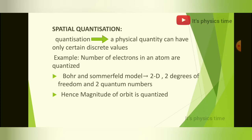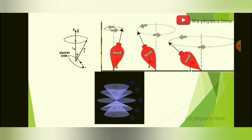The Bohr and Sommerfeld atom model have the orbits of the electron in two dimensions. If you want to define the position of the electron, you need two degrees of freedom and hence two quantum numbers, where the magnitude of the orbit is quantized. This picture shows the spatial quantization and how it occurs. The B vector is the magnetic field and L vector is the orbital angular momentum. When the magnetic field is applied, the orbital angular momentum precesses about the applied magnetic field, so the orientation of angular momentum is quantized. The second picture shows a top, which also experiences precessional motion.